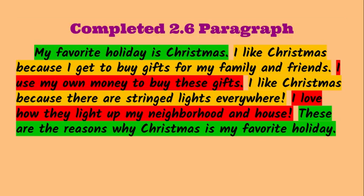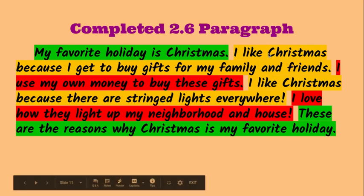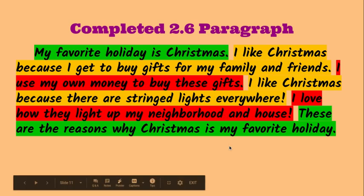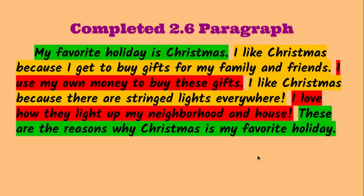Here is my completed 2.6 paragraph: My favorite holiday is Christmas. I like Christmas because I get to buy gifts for my family and friends. I use my own money to buy these gifts. I like Christmas because there are stringed lights everywhere. I love how they light up my neighborhood and house. These are the reasons why Christmas is my favorite holiday. Notice I have my two main points for one topic — both highlighted in yellow — and details for those two main points highlighted in red. This is an okay paragraph; it gets the point across but could sound better. In Wednesday's video I will revise this paragraph so it includes some transitions that will make it flow more smoothly.